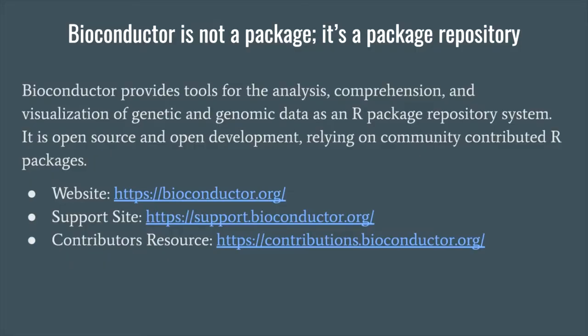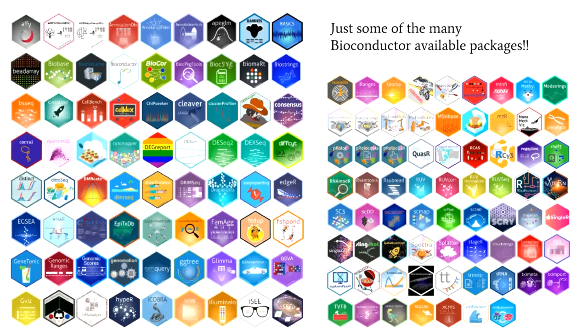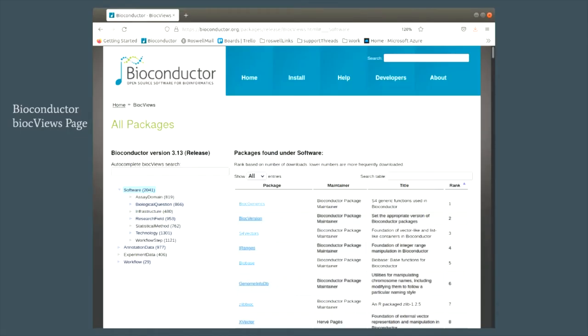The first thing that surprised me when I started going to more general R and computing conferences was the misconception that Bioconductor was a single R package. The Bioconductor project is much larger than a single package. Bioconductor is an open source and open development R package repository system that focuses on analysis, comprehension, and visualization of genetic and genomic data. There are currently over 2,000 software packages in addition to specialized data experiment, annotation, and workflow packages available through the Bioconductor interface.